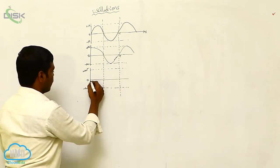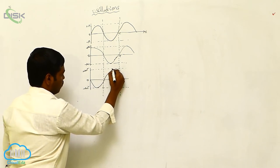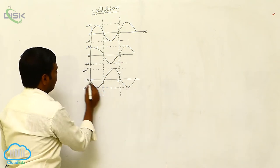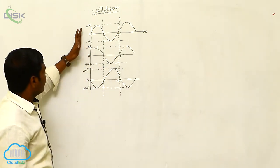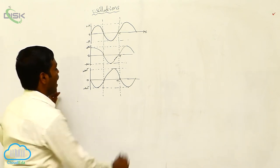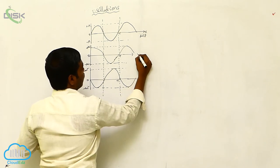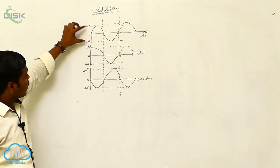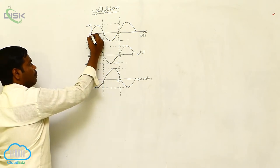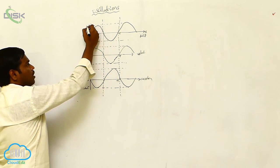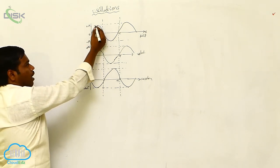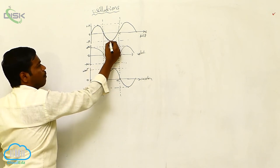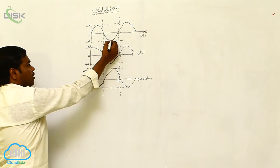The acceleration graph is plotted along time. Now if we compare this displacement, velocity and acceleration: the displacement is maximum at the extreme position and when it comes to the mean position the displacement is zero, and again in the opposite direction it is maximum at the extreme position.